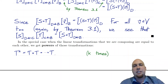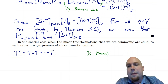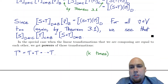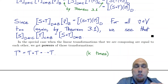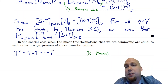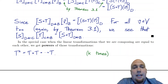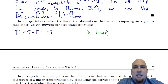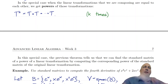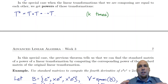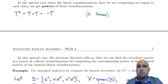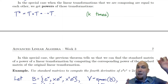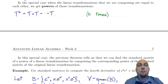You can compose all sorts of times, so the k-th power of a linear transformation is just it composed with itself a total of k times. For example, t to the power one is just t, t to the power two is t composed with t, and so on. The previous theorem tells us that if you want to compute the standard matrix of a power of a linear transformation, you can just compute the power of the standard matrix.